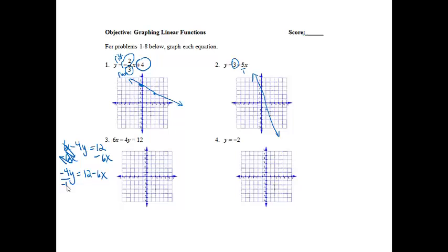And then here, we're going to divide all three parts by negative 4, not just 4. That's where I think most people got stuck. So we're going to get y equals 12 divided by negative 4 is negative 3.